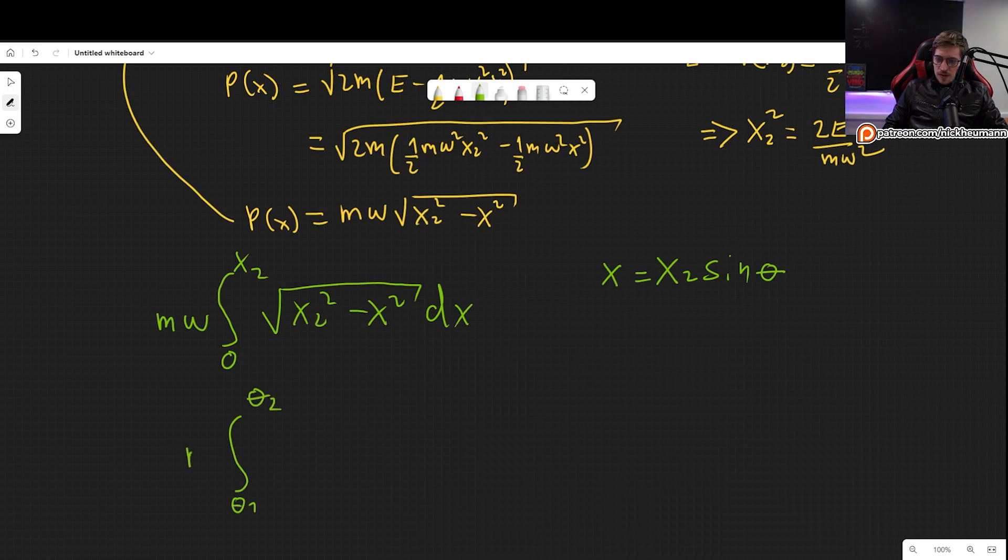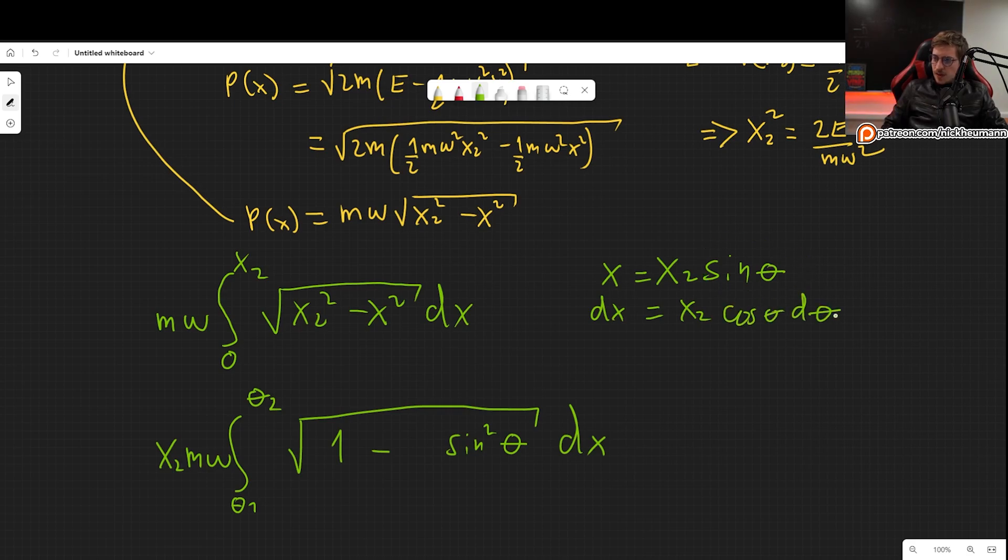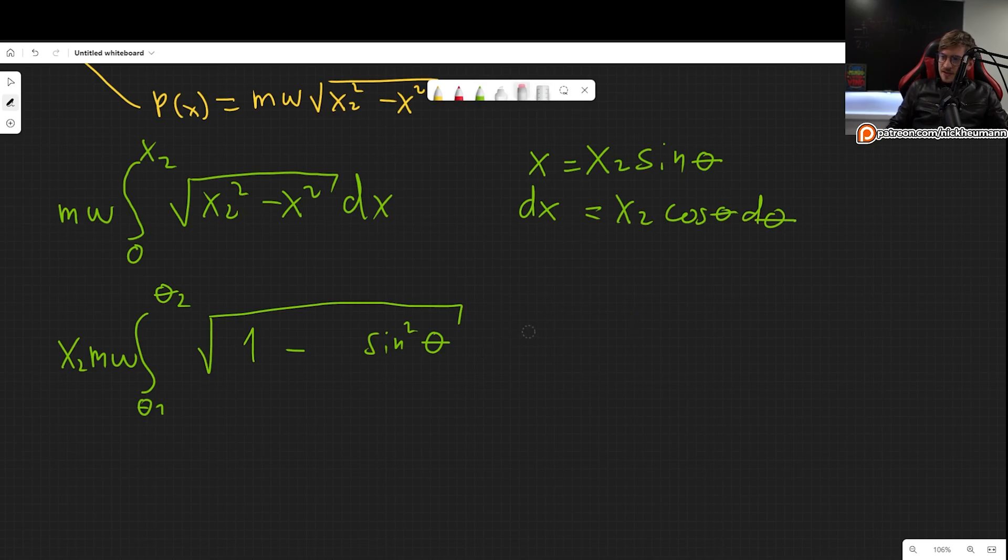So this goes from theta 1 to theta 2. We will find the values very soon. And if we plug it in, we have x2 squared minus x2 squared sine squared of theta. So we can factor out x2 squared, which of course will simply be x2, and we get 1 minus sine squared of theta and dx, which we haven't yet replaced. So let's take dx. This is x2, and the derivative of sine theta, which will be cosine theta d theta.